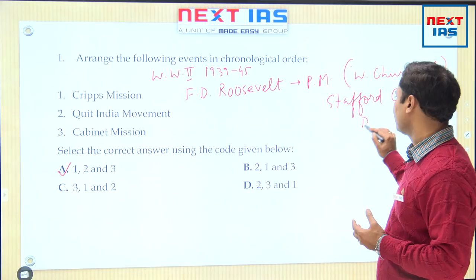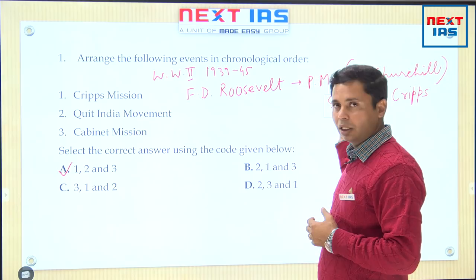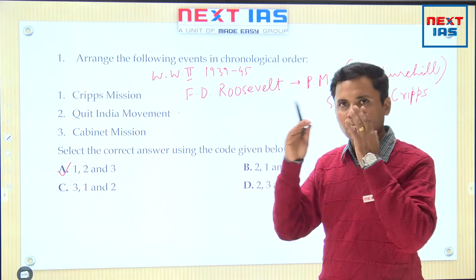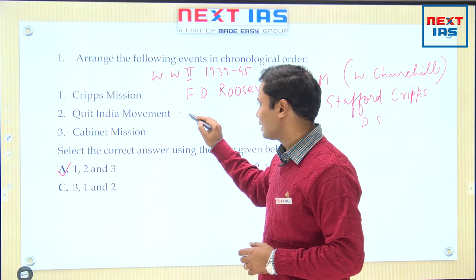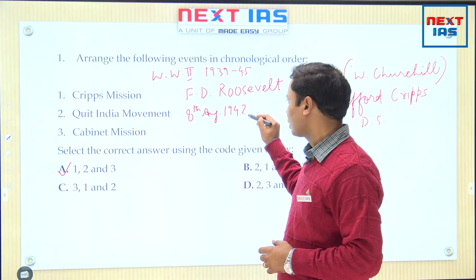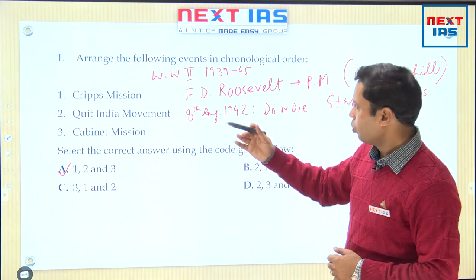For example, Cripps promised dominion status, which was not accepted because we were seeking complete independence. The rejection of the Cripps Mission led to the launching of the Quit India Movement. So you don't have to mug up — just think that the failure of the Cripps Mission led to the launching of the Quit India Movement in August, launched precisely on 8th August 1942, where Gandhi gave a clarion call of 'do or die,' and in the early morning of 9th August all the prominent leaders were jailed.